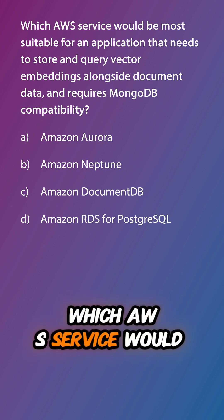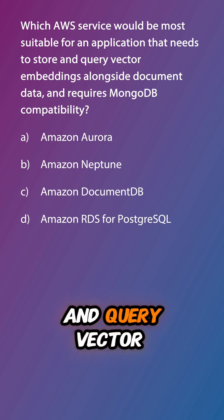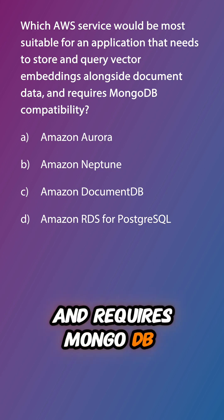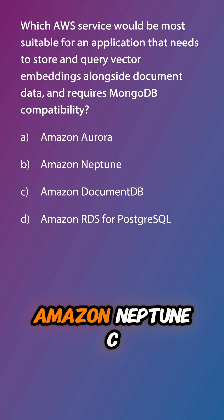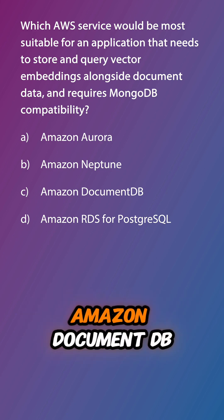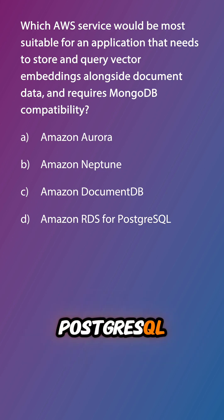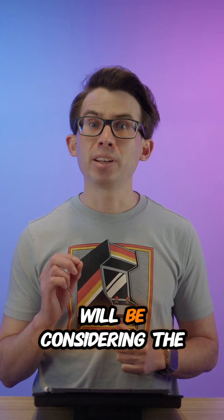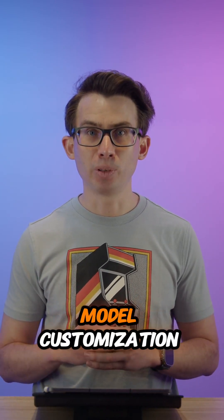Let's do a review question. Which AWS service would be most suitable for an application that needs to store and query vector embeddings alongside document data and requires MongoDB compatibility? A, Amazon Aurora? B, Amazon Neptune? C, Amazon DocumentDB? Or D, Amazon RDS for PostgreSQL? Post your answer in the comments and we'll review in the next episode, where we'll be considering the cost trade-offs of various approaches to foundation model customisation.